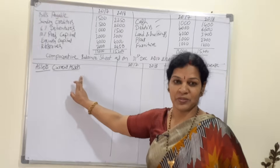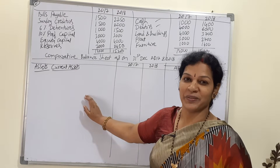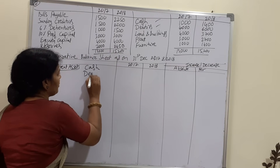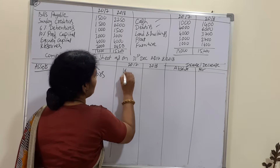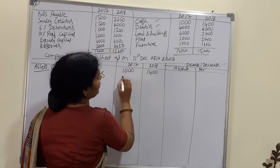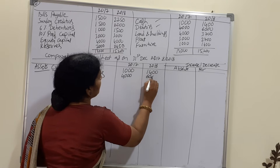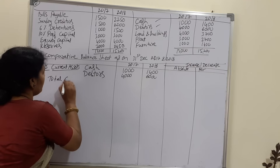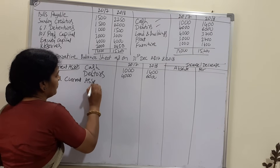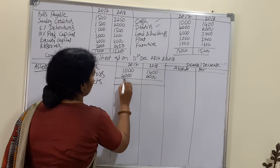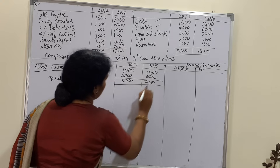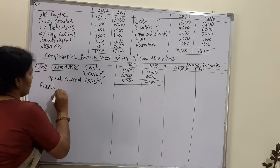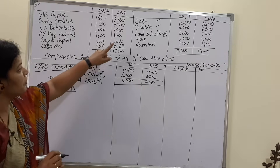First, we take assets. Assets are divided into two parts: current assets and fixed assets. Under current assets we will mention cash and debtors. Cash is 1,000 and 1,400; debtors are 4,000 and 6,000. So total current assets come to 5,000 and 7,400.